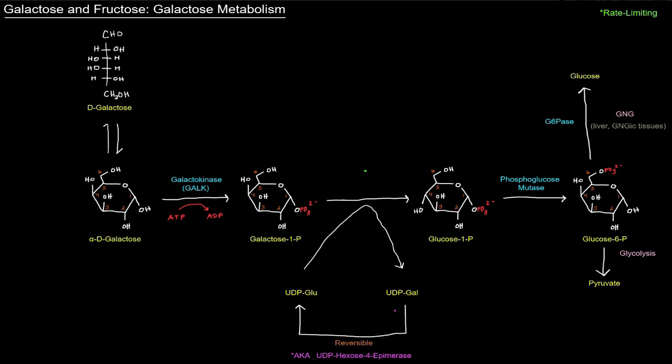Now that galactose-1-phosphate is going to be turned into glucose-1-phosphate. The only difference between those two molecules is what's going on at carbon number four - these guys are basically epimers. That's going to be done by an enzyme called GALT, or galactose-1-phosphate uridyl transferase.